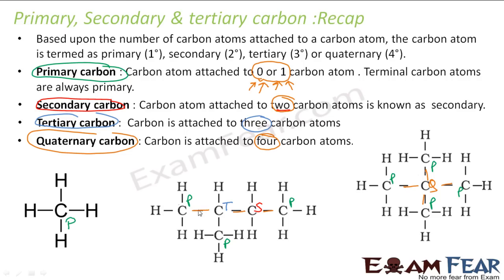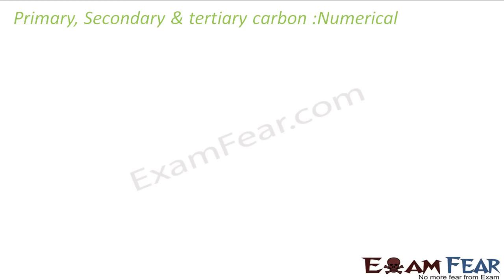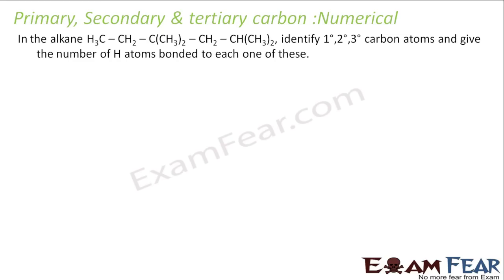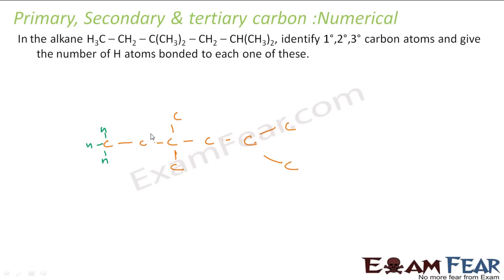Let's take a numerical example to identify primary, secondary, tertiary, and quaternary carbons in an alkane. Here is the structure — let me draw it and put in the hydrogens. This carbon has three hydrogens, this one has two hydrogens, this one has three hydrogens, this one has one hydrogen, and these each have three hydrogens.